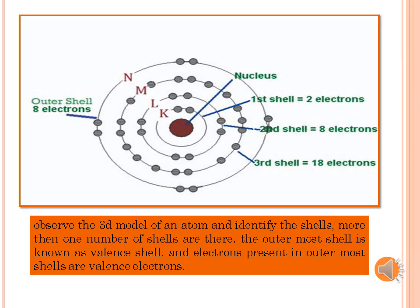Observe the 3D model of an atom and identify the shells. More than one number of shells are there. The outermost shell is known as valence shell, and electrons present in the outermost shells are valence electrons.